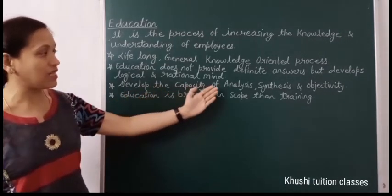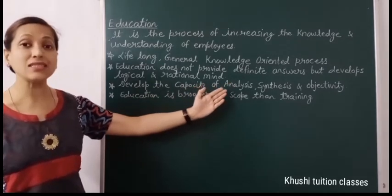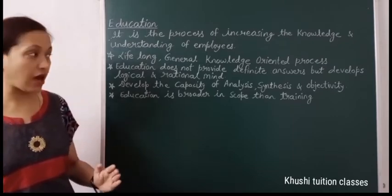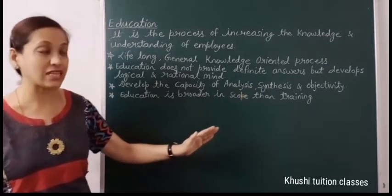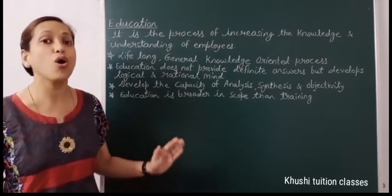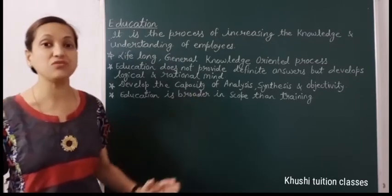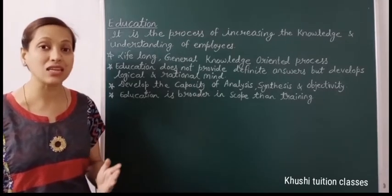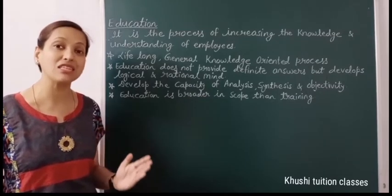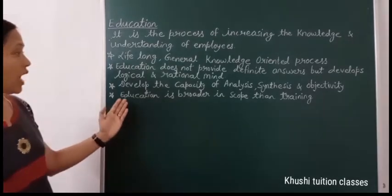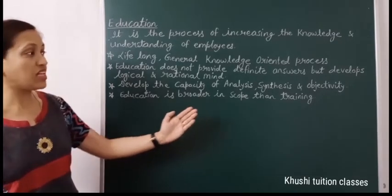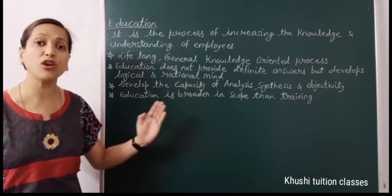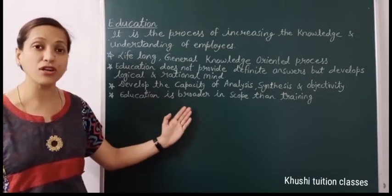Education develops the capacity of analysis, synthesis and objectivity. Analysis means simplifying any complex or difficult thing, theory or concept. Synthesis is the opposite of analysis — it makes a simple thing complex or difficult. Objectivity means a person takes just and fair decisions; their decisions are not biased, there is logic behind them, they are practical and not emotional. Education is broader in scope than training, because training is related to organizational goals, whereas education is related to individual goals.